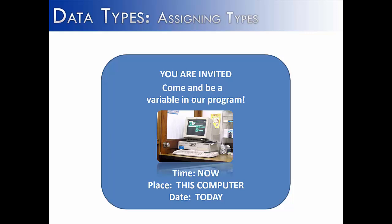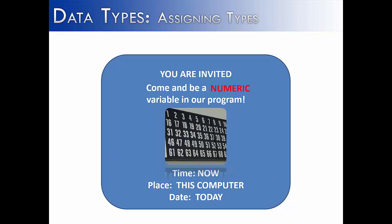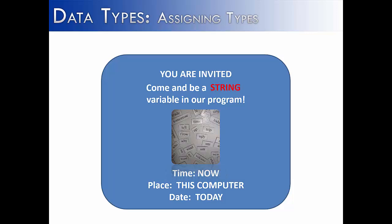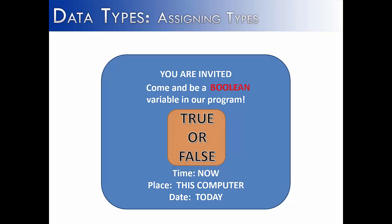So the first major type is a numeric type, and that's going to divide into integers and real numbers. The next type is going to be string, and those are going to be words inside of a program. And the last type that you could be invited as is a Boolean, meaning you're either going to be true or false.